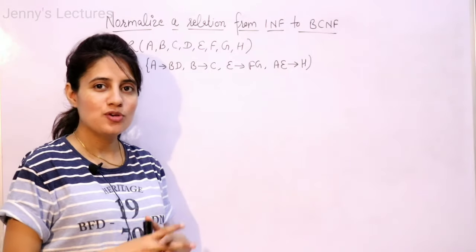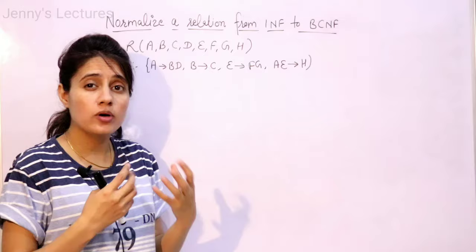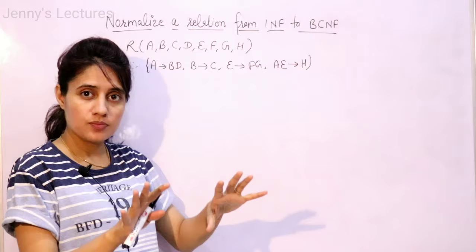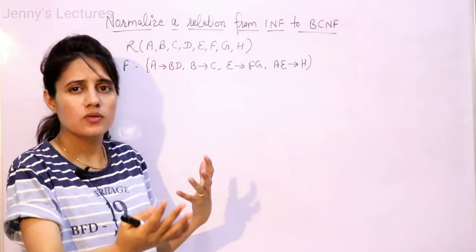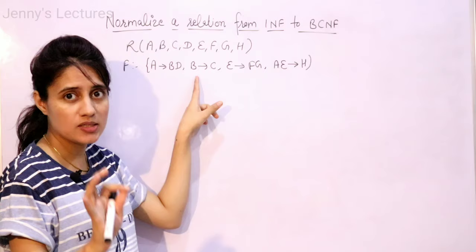In this lecture, I am going to take a complex, lengthy example and we will see a step-by-step explanation of how to convert a relation which is in first normal form to BCNF. I have already discussed from first to second and from second to third in previous videos. In this video, I am going to combine all the steps — from first to BCNF — and this relation is in first normal form.